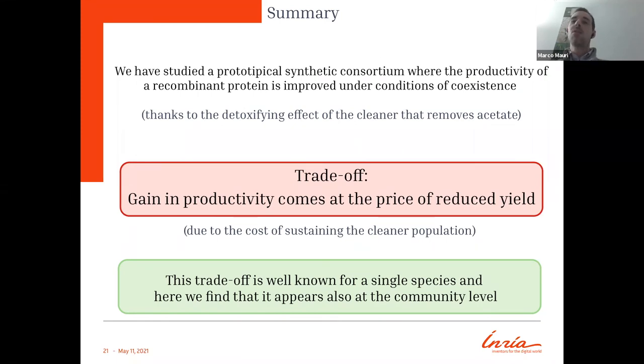There is a trade-off in the system, so there is a gain in productivity, but there is a price to pay that is a reduced yield in the system, and it's due to the cost of sustaining the cleaner population. Generally, this is actually a good point to link a single species to the community because this trade-off is something that is actually well known for a single species. For example, the yield decreases by increasing the growth rate because substrate goes into overflow of acetate. And we found also this trade-off here at the level of community.